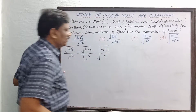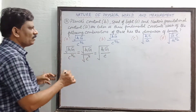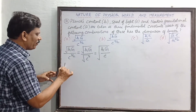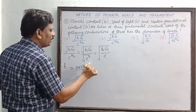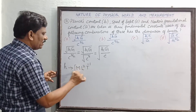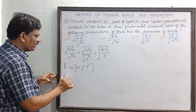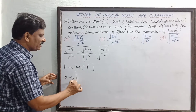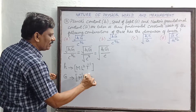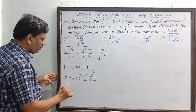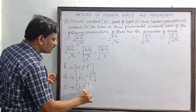Now I will substitute the dimensional formula for each constant. The dimensional formula for Planck's constant H is ML²T⁻¹. The dimensional formula for gravitational constant G is M⁻¹L³T⁻². The velocity of light C has dimensions LT⁻¹.